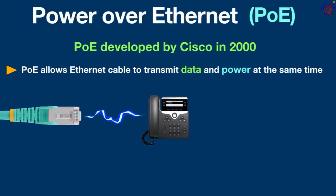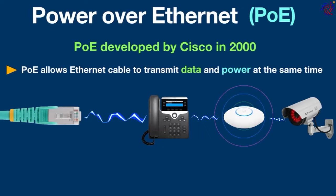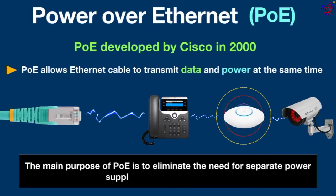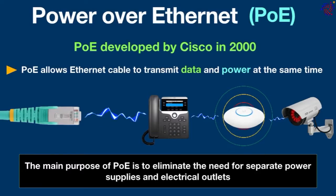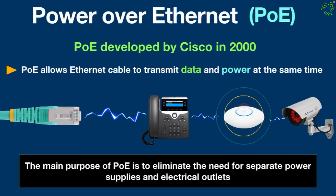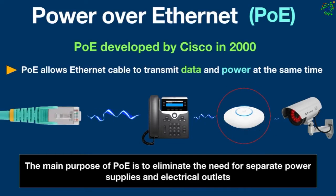PoE delivers DC power to devices such as VoIP phones, wireless access points, and IP security cameras over the copper wires in an ethernet cable. The main purpose of PoE is to eliminate the need for separate power supplies and electrical outlets, and it cuts the expense of installing additional electrical wiring, which requires professional electrical engineers to ensure all rules and regulations are followed.